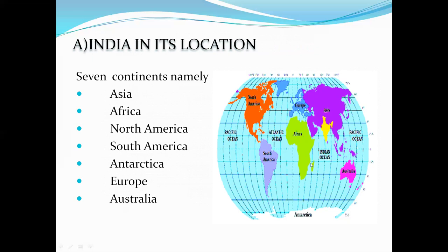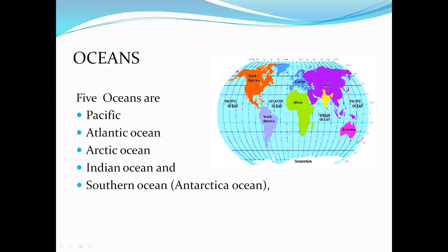You can see the seven continents over this globe. Coming to the oceans, we have five oceans: Pacific Ocean, Atlantic Ocean, Arctic Ocean, Indian Ocean, and Southern Ocean, which is also called the Antarctic Ocean. You can able to recognize all five oceans in the globe.